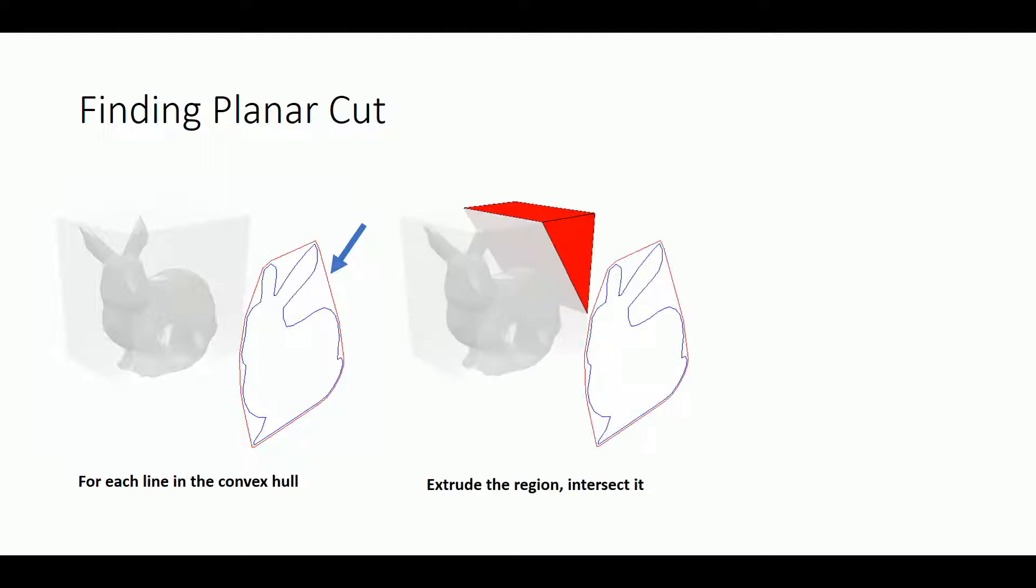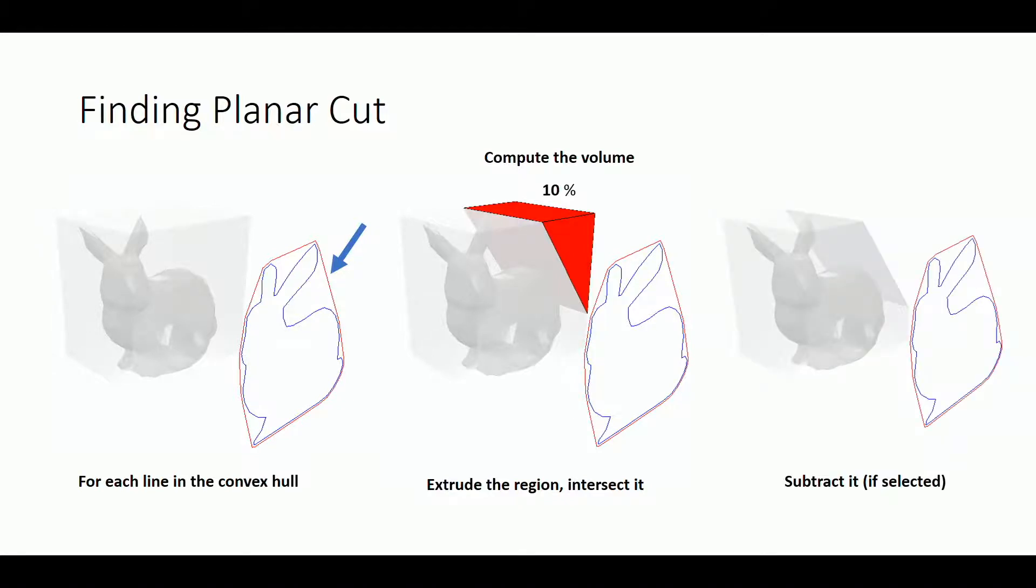We use these regions to define the cuts. We have two types of cuts. For the planar cuts, we use the lines of the convex hull. For each line, we project it in the direction toward the material, compute the volume of the intersection, and if that's the largest volume, we keep that cut.